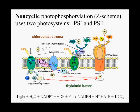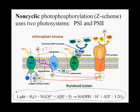In summary, non-cyclic electron flow generates oxygen gas. It generates a proton gradient across the membrane, which is used to power ATP synthesis. And it generates reducing power to reduce NADP+ to NADPH. The equation written here at the bottom summarizes all of that.